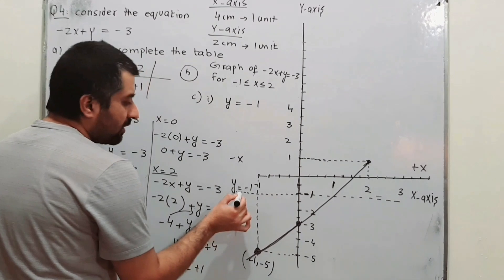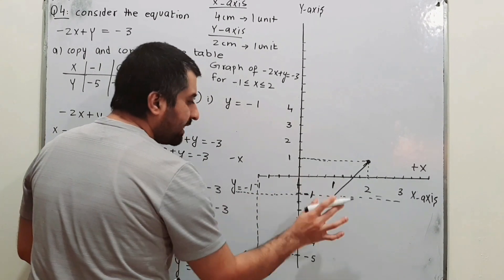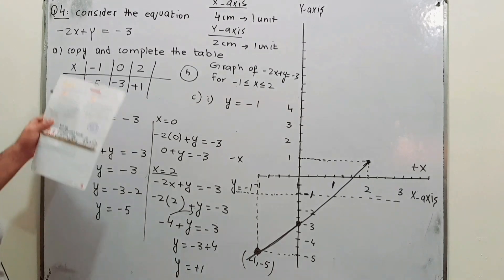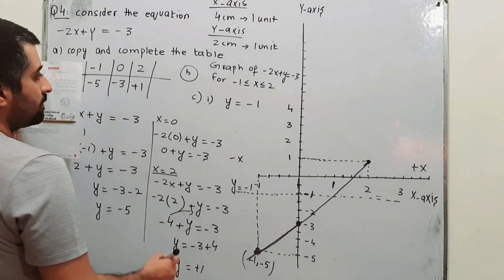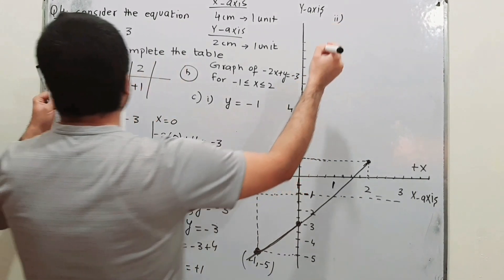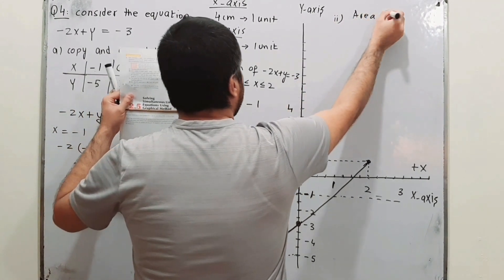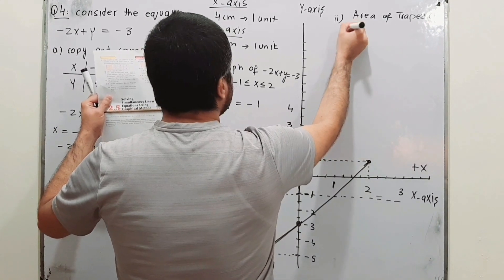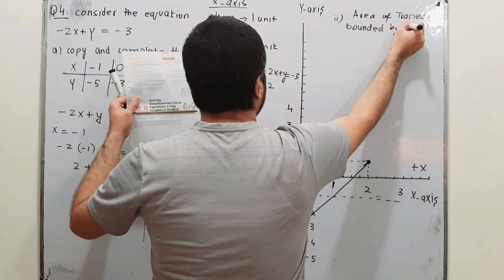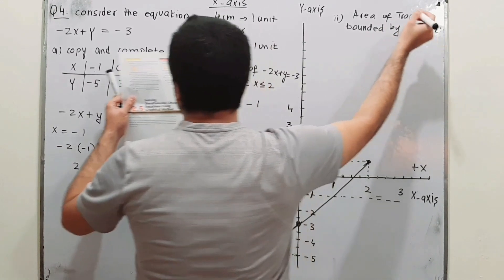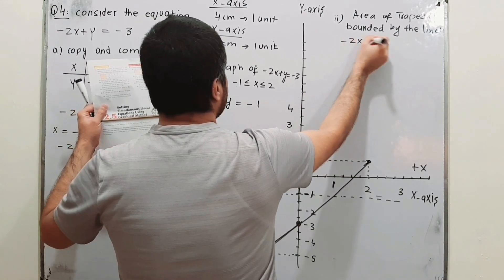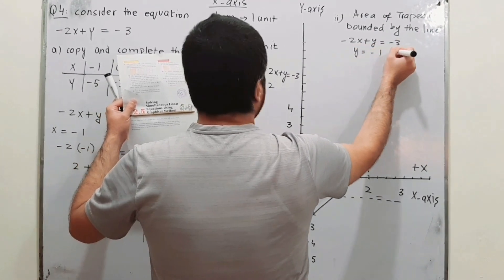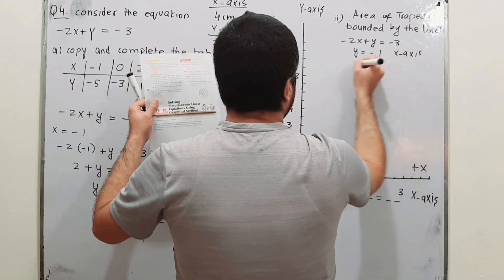This horizontal line is the graph of y = minus 1. On this entire line, y is minus 1 at every point while x takes different values. Part C2 asks you to find the area of the trapezium bounded by the lines minus 2x plus y = minus 3, y = minus 1, the x-axis, and the y-axis.